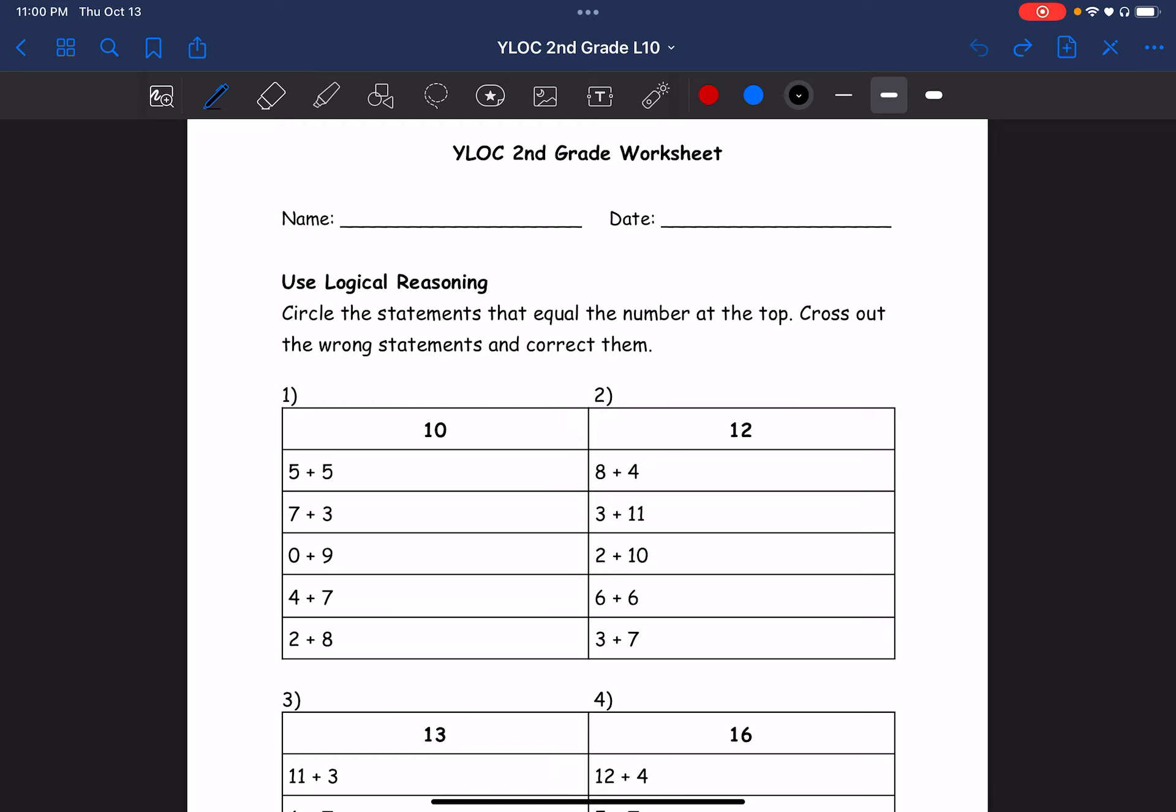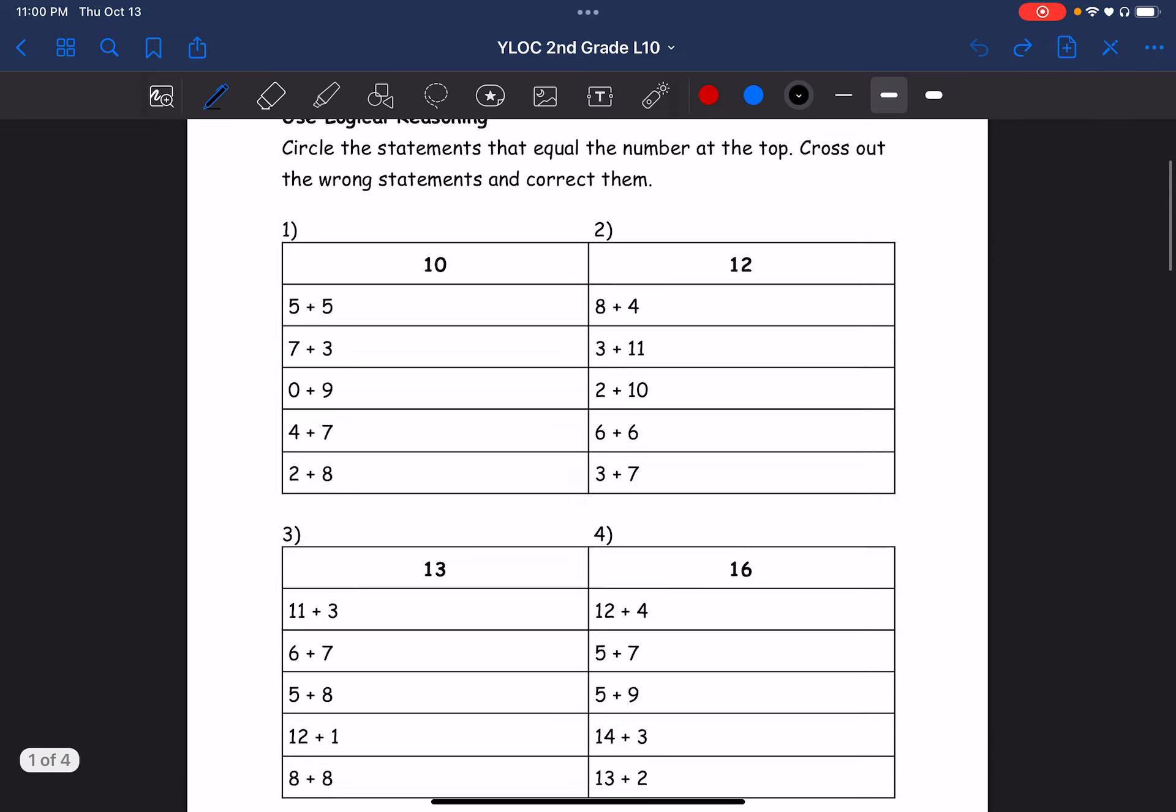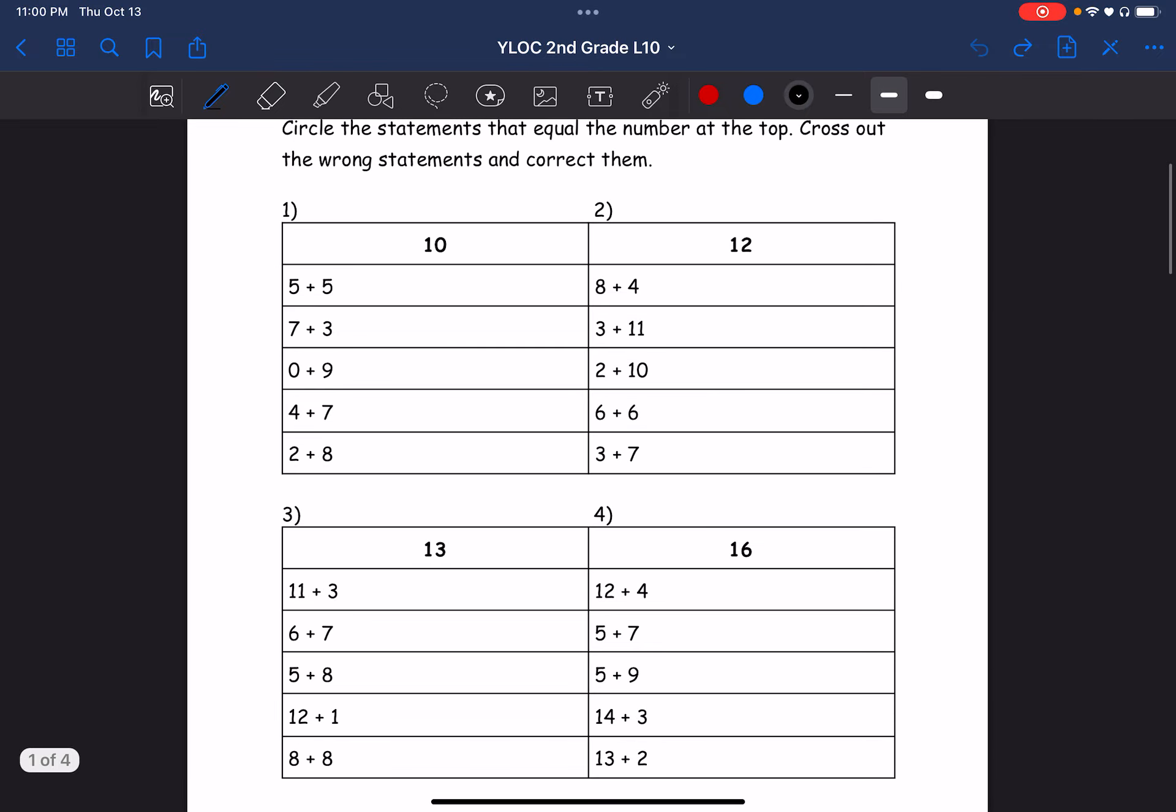Alright, so number one we see it has to equal 10. Let's see, 5 plus 5, yep that equals 10 so we circle that and leave it. 7 plus 3 also equals 10 so we circle and leave.